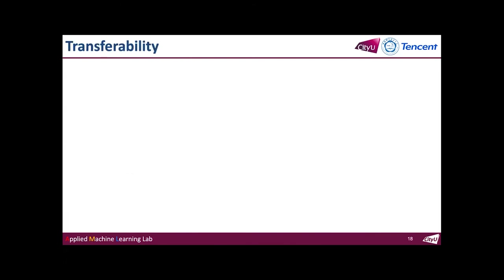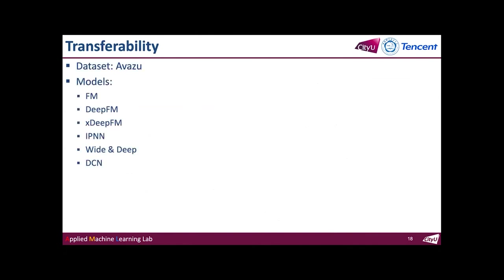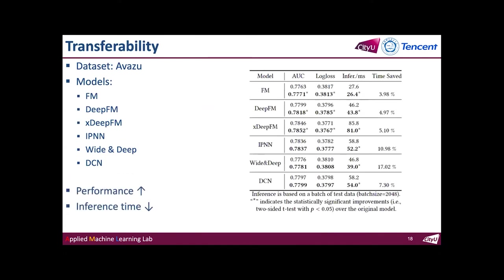The second experiment is the transferability test. We test the transferability of AutoField on the Amazon dataset with six different state-of-the-art models equipping the retraining stage. The first line of each block is the result using all feature fields, and the second line is the result using feature fields selected by AutoField. It reveals that AutoField could enhance recommendation performance and reduce inference time. The performance improvement is significant on the first three models, while AutoField helps save more inference time on the last three models.